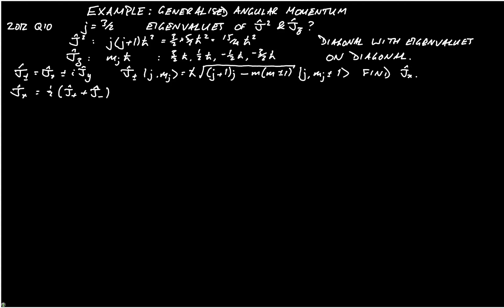And then we simply consider what the matrix elements might be. So if we take, in general, bra j m a, and when I say m a, what I mean is that's going to represent one particular value of m. And then I'm going to have a half into j plus plus j minus. And then I'm going to have j m b. So that's going to be a general matrix element for jx.